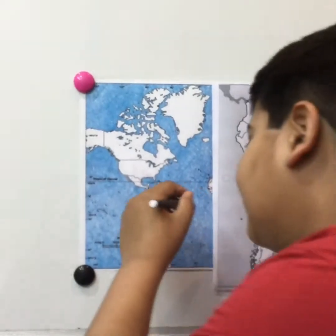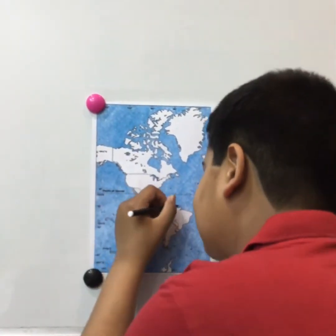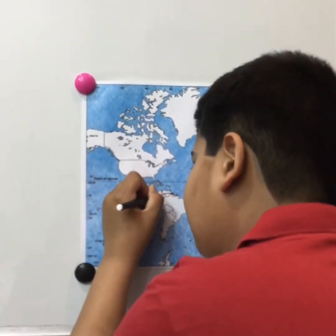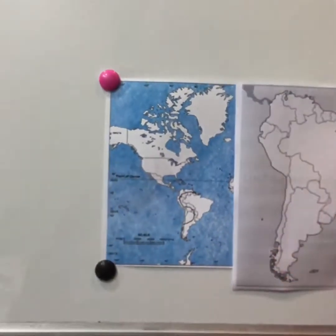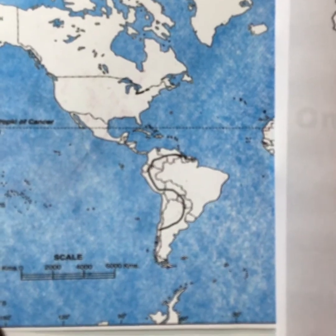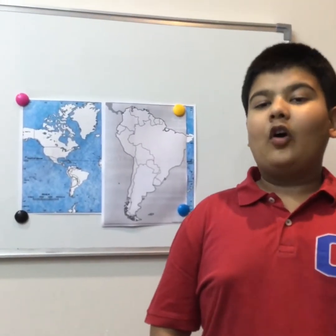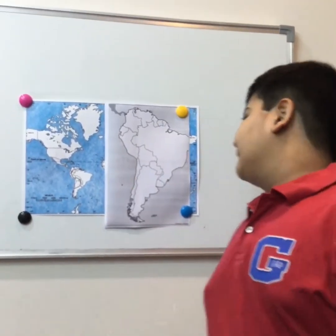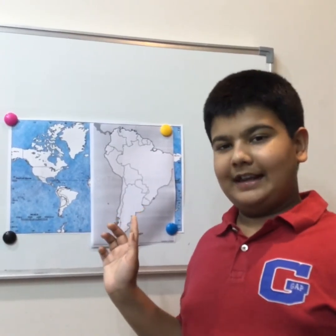First of all, I would like to tell you that almost all the countries can be covered by the shape of S. There are 13 countries in South America which can be covered by the shape of S. Now let us have a look at them on the enlarged map, where I'll show you the shape of S.